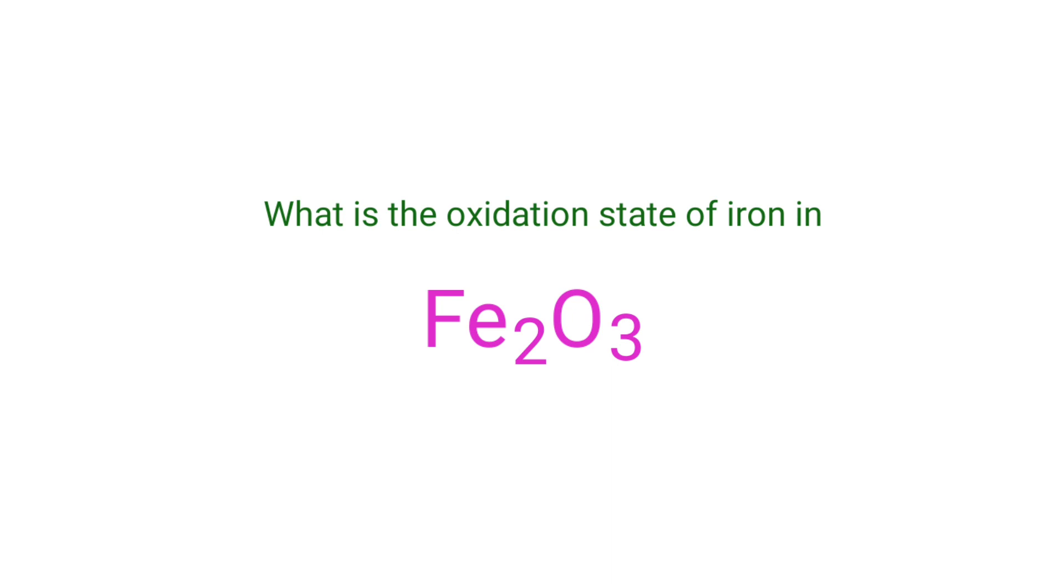What is the oxidation state of iron in ferric oxide? We can use the oxidation number rules to determine oxidation numbers. Ferric oxide is a neutral compound with overall oxidation number zero.